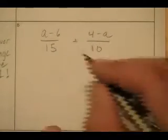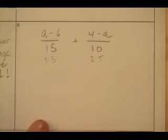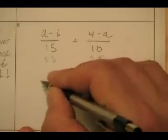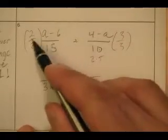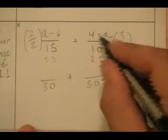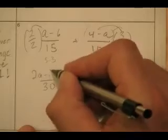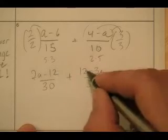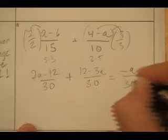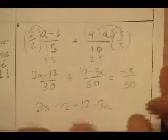Here's another one. 15 is the same thing as 5 times 3, and this is 2 times 5. So I need to have a 5, a 2, and a 3 — you know it's 30. So I'm going to rewrite these guys over 30. How many 15's go into 30? 2 — so I multiply this by 2 over 2. How many 10's go into 30? 3 — I multiply this by 3 over 3. I'm multiplying each fraction by 1 so I don't change its value. 3 times 4 is 12 minus 3a. Then 2a minus 12. Add them up: negative 12 and positive 12 cancel, 2a minus 3a is negative a over 30.